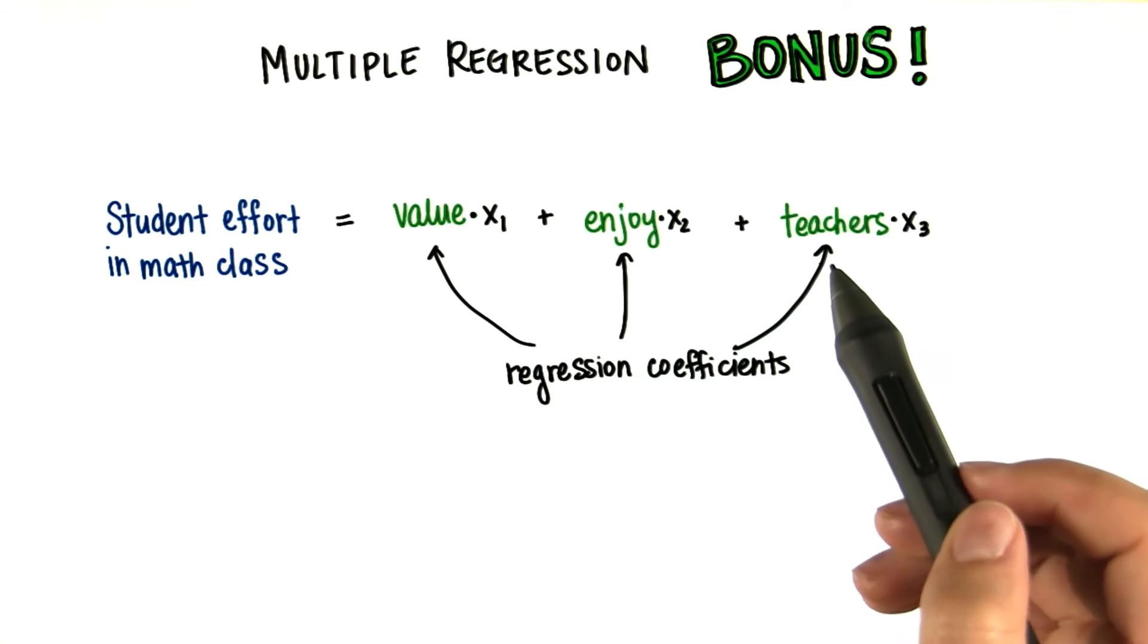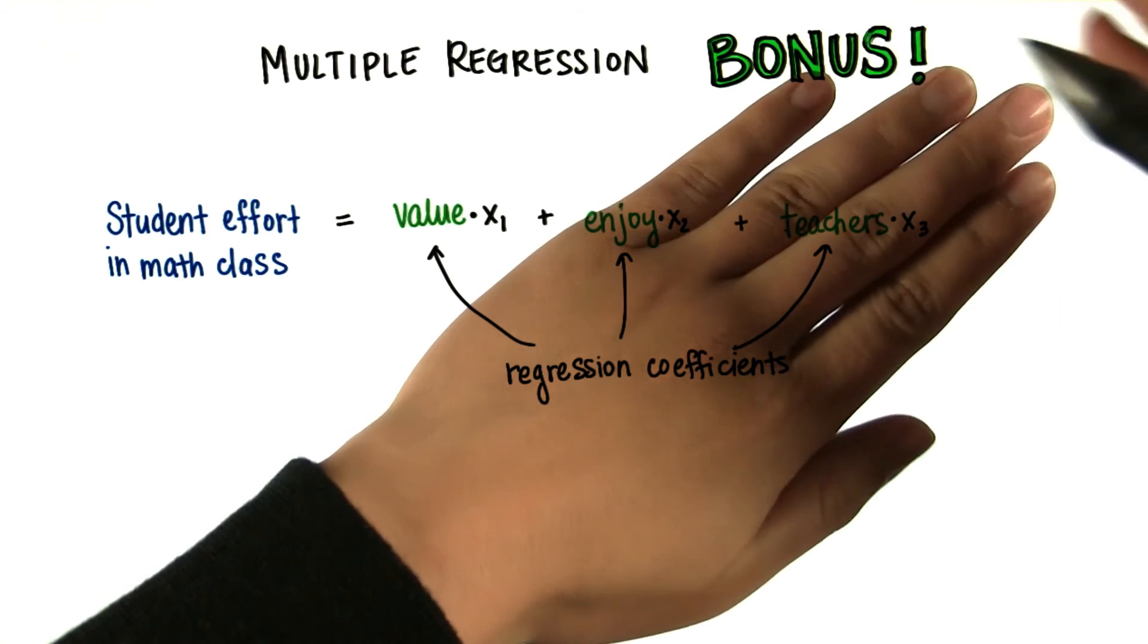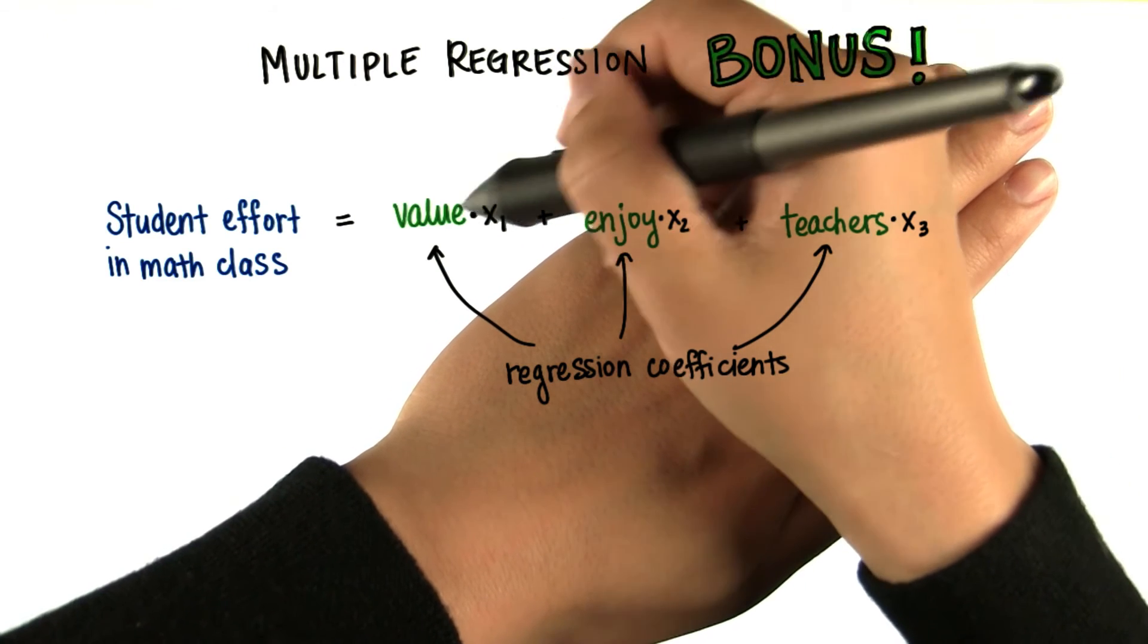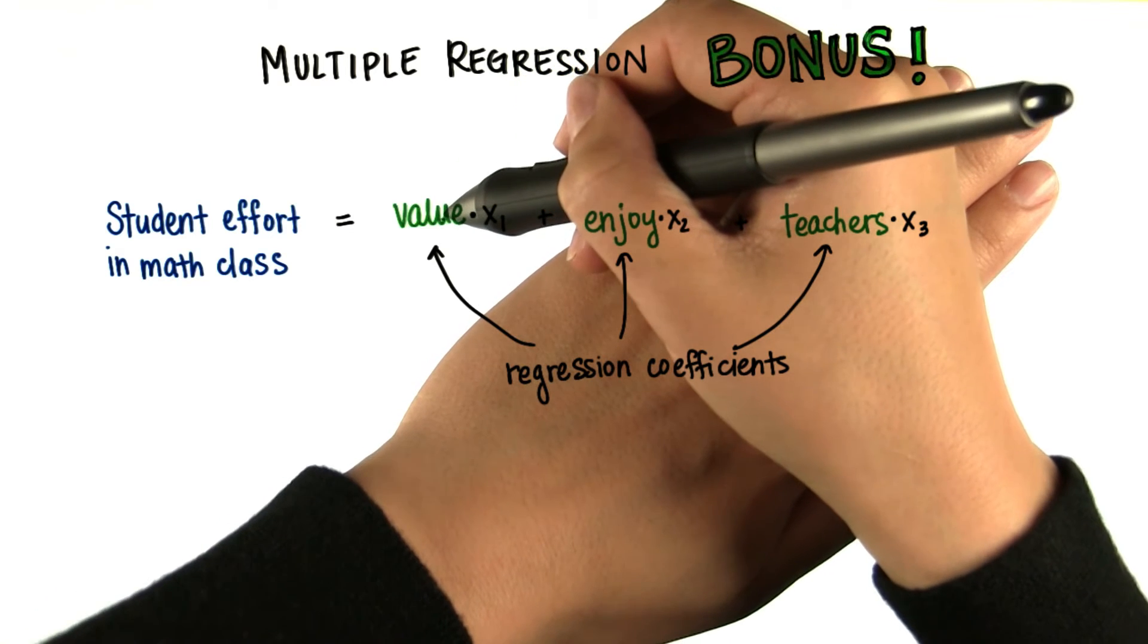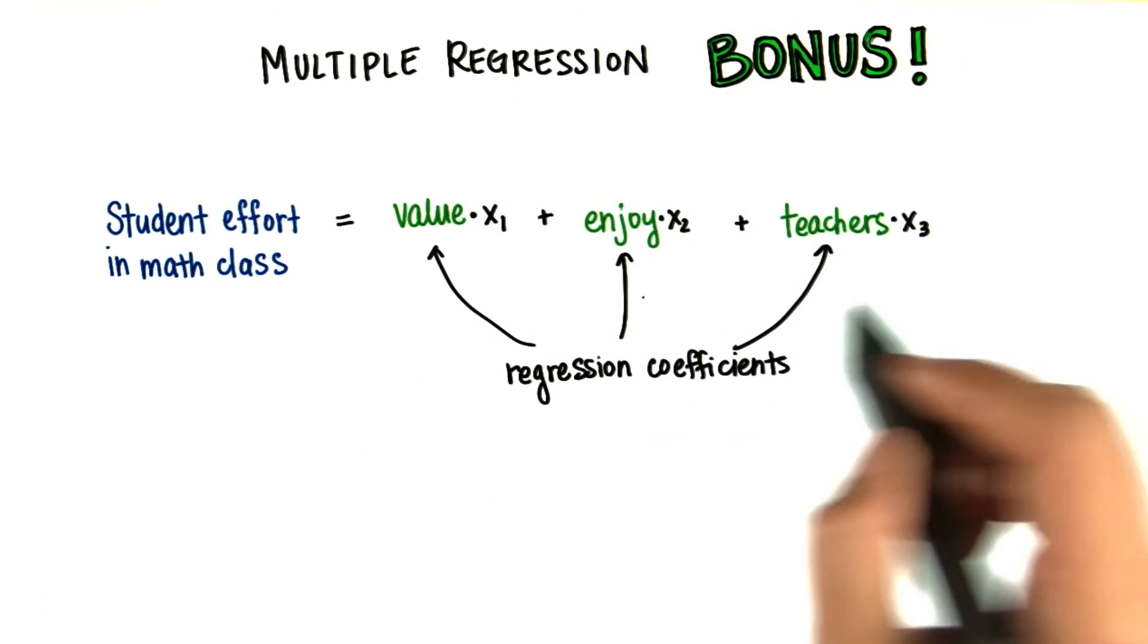These will be numbers. Just like how before, when we had one variable, we found the slope, and that was our regression coefficient. In this case, we'll have three.